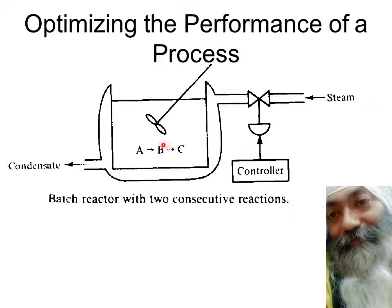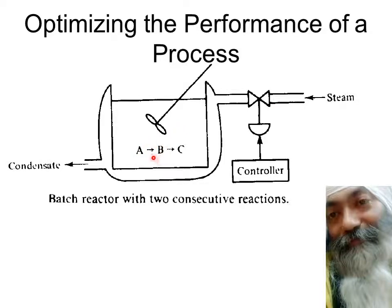B is the desired product. But if this B continues to be heated, it will turn into a third product C, which is the waste product. So how much heat should be supplied, in what manner the heat should be supplied, and what should be the profile of the steam flow rate — because we are controlling the steam flow rate — so that A gets converted to B, but at the same time B should not get converted into C.